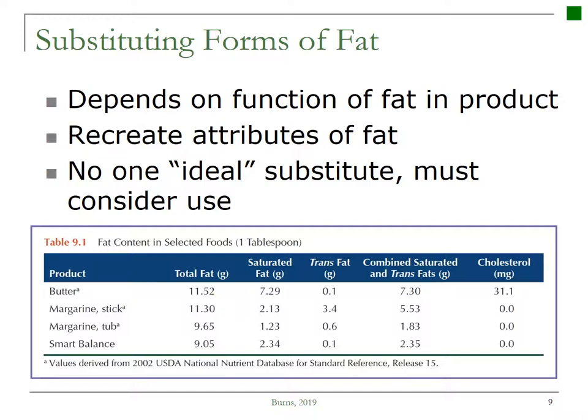There is not one ideal substitute, so if we are exchanging an oil for a shortening, we're adding a liquid into the formula, and we need to consider that as well. Table 9.1 on the bottom of your screen shows you the fat content in selected fats looking at just one tablespoon. You can see that butter is the only one that contains cholesterol, which makes sense because it comes from an animal fat. You can also see great variation in the trans fats as well as the total fat and the saturated fat.